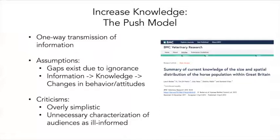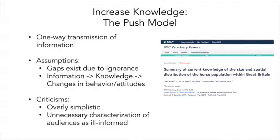Push models involve one-way transmission of information and assume that gaps exist due to ignorance — that information becomes knowledge and then becomes a change in behavior and attitudes. But that isn't always the case because there are often enablers and inhibitors that prevent this. This is an overly simplistic approach and an unnecessary characterization of audiences as ill-informed, though it's sometimes useful if you want to mobilize society with very large-scale messaging. However, it isn't particularly good for vulnerable communities or communities at risk.